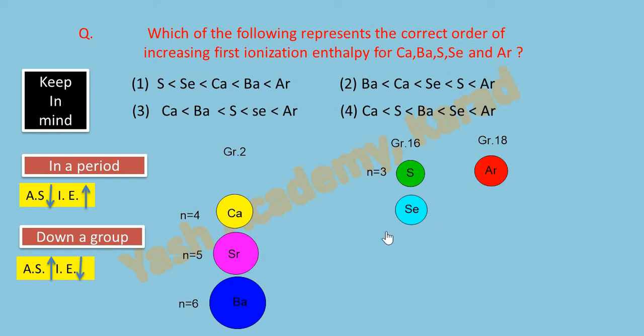So the correct option of this question is second, that is Ba < Ca < Se < S < Ar. Barium has less ionization enthalpy than calcium which has less than selenium which has less than sulfur, and argon has the highest first ionization enthalpy. So this is the correct option of this question.